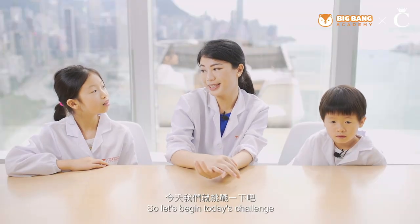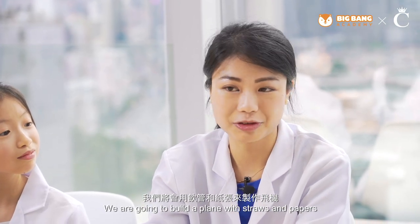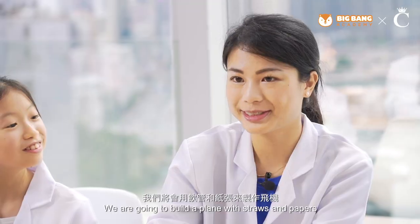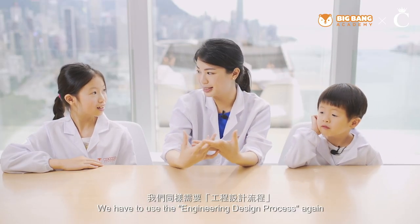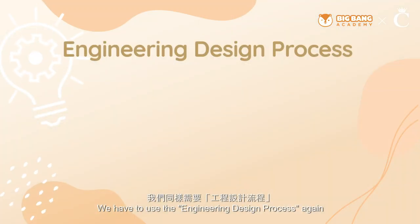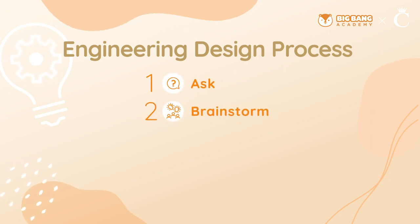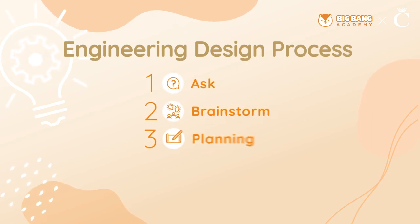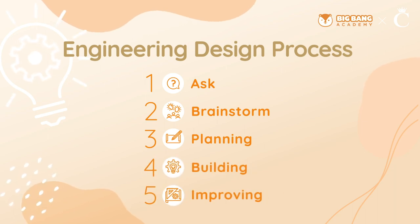So let's begin today's challenge. We're going to build a plane with straws and paper. To complete this challenge, we have to use the engineering design process again. The first step is ask. The second step is brainstorming. The third step is planning. The fourth step is building. And the fifth step is improving.